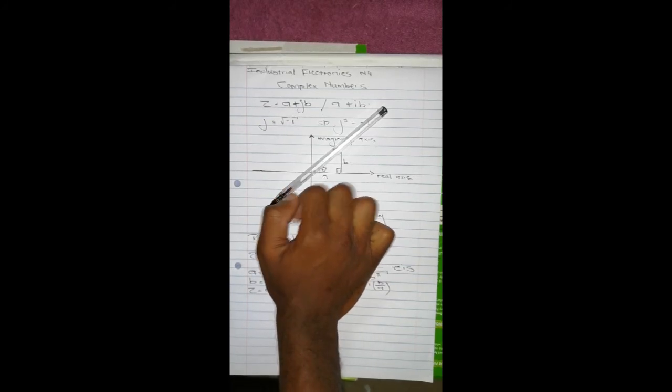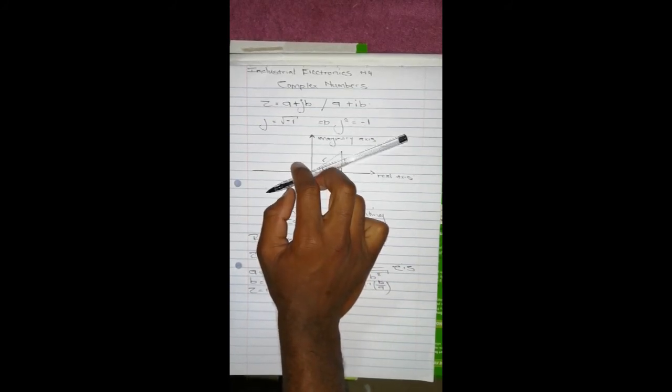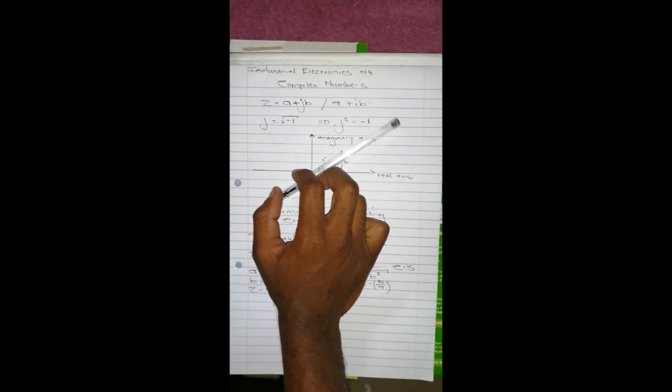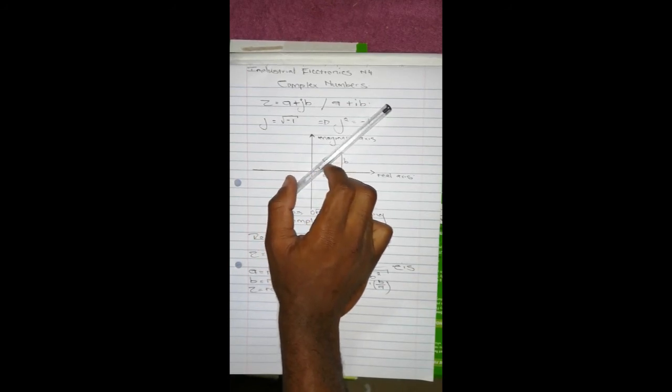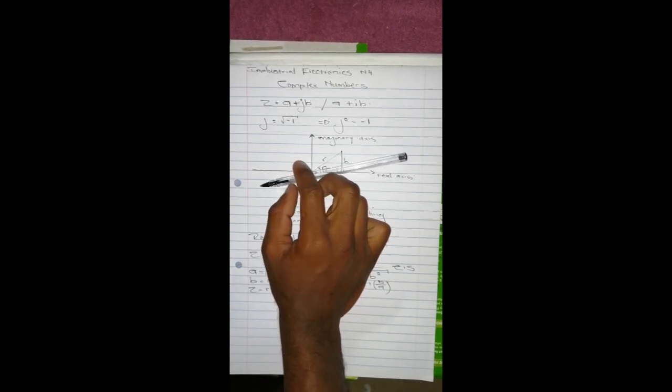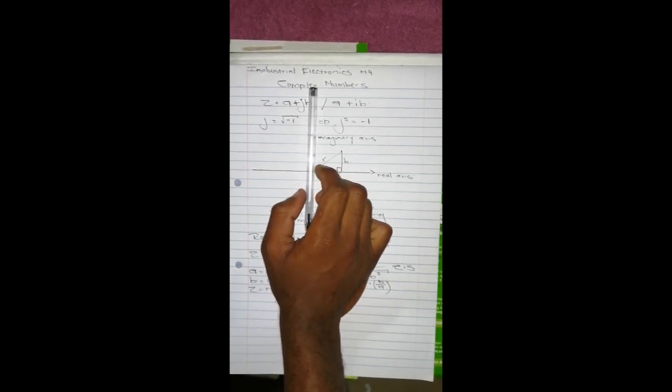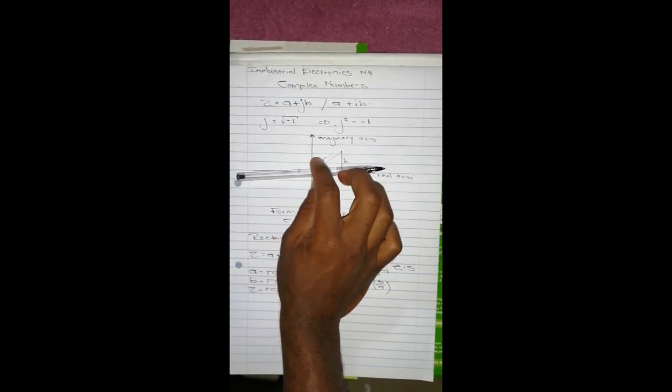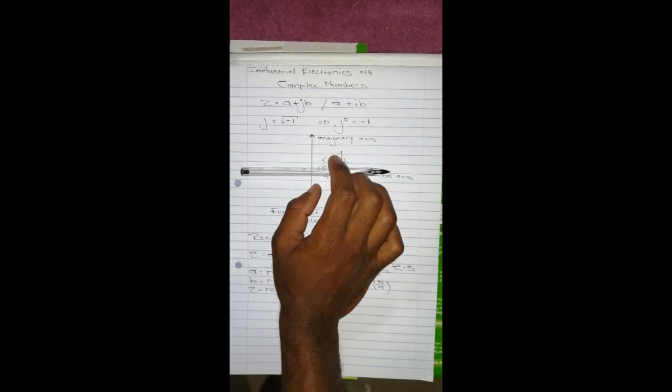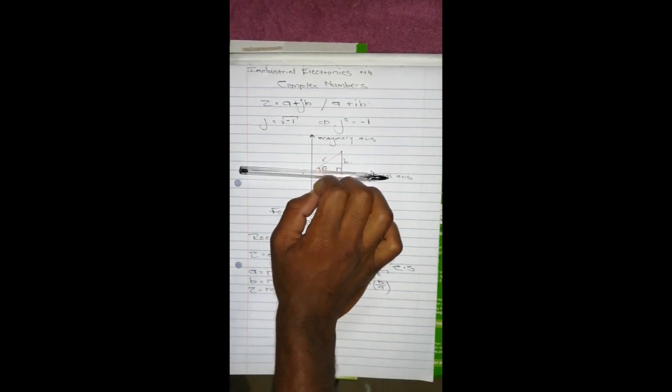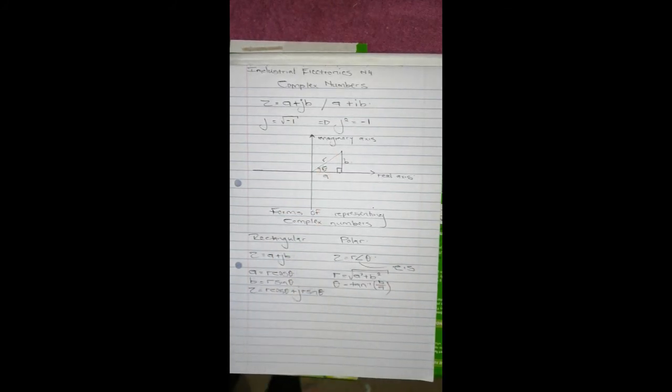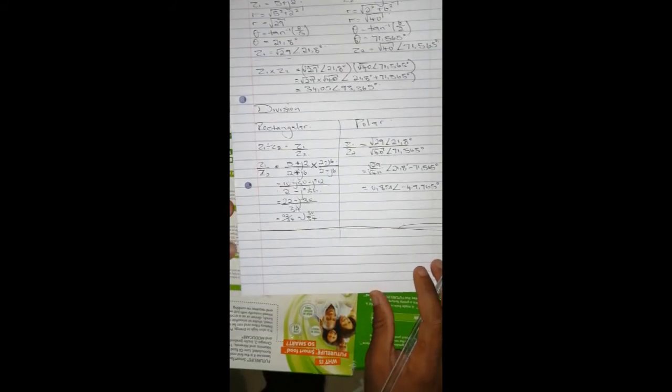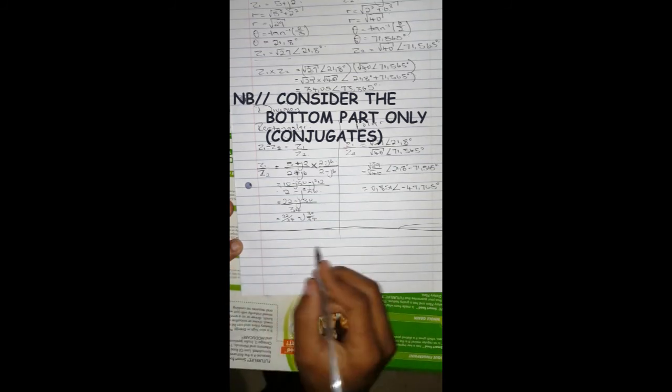So normally 'j' itself just means that there's a rotation of an anti-clockwise rotation of 90 degrees, and j squared means there's an addition of another 90 degrees, so it's a 180 rotation. And that's it for the basics of complex numbers. I think I forgot with the basics, with the complex numbers, is the conjugates.